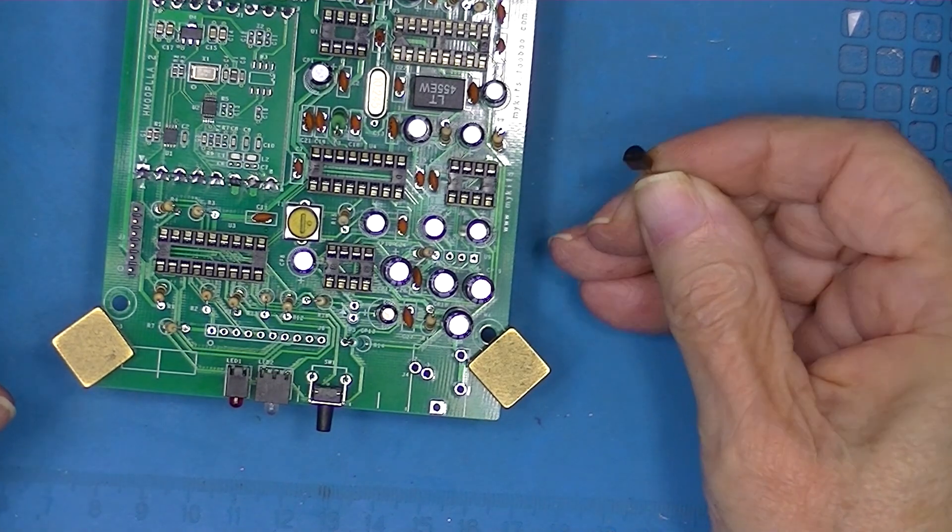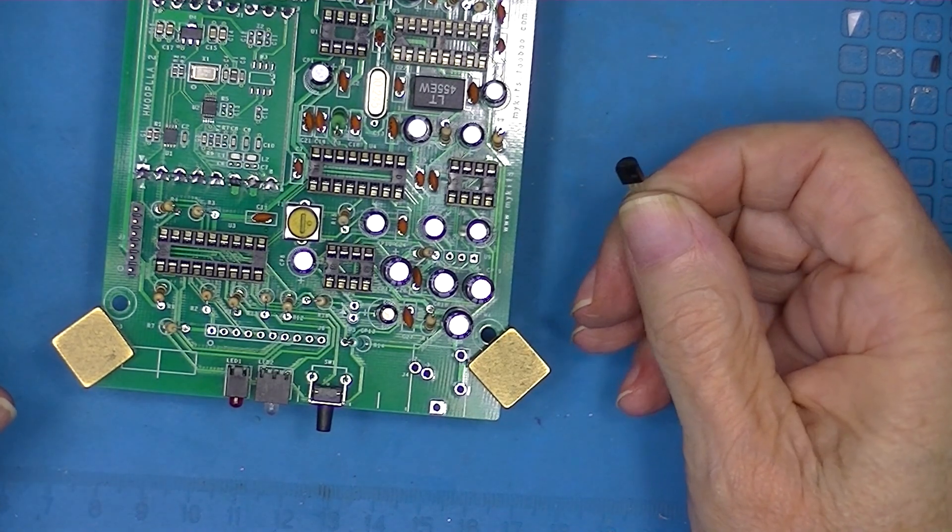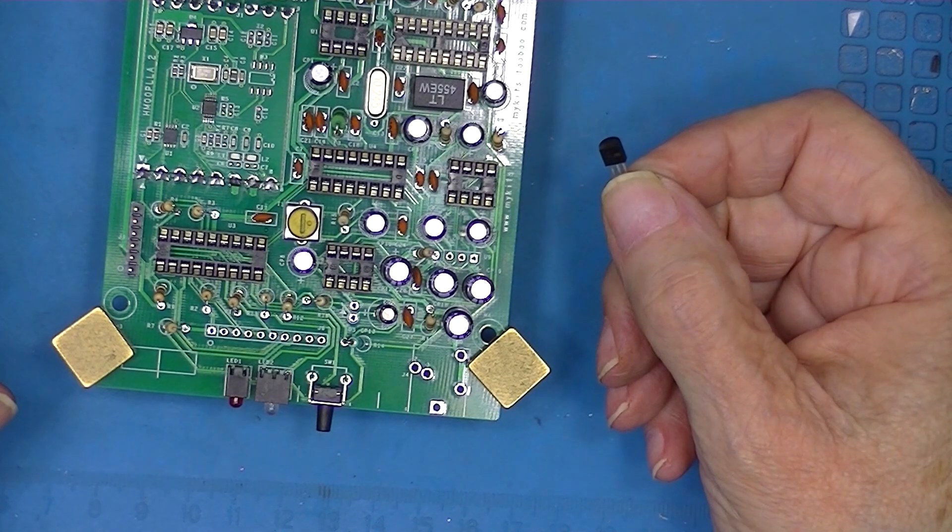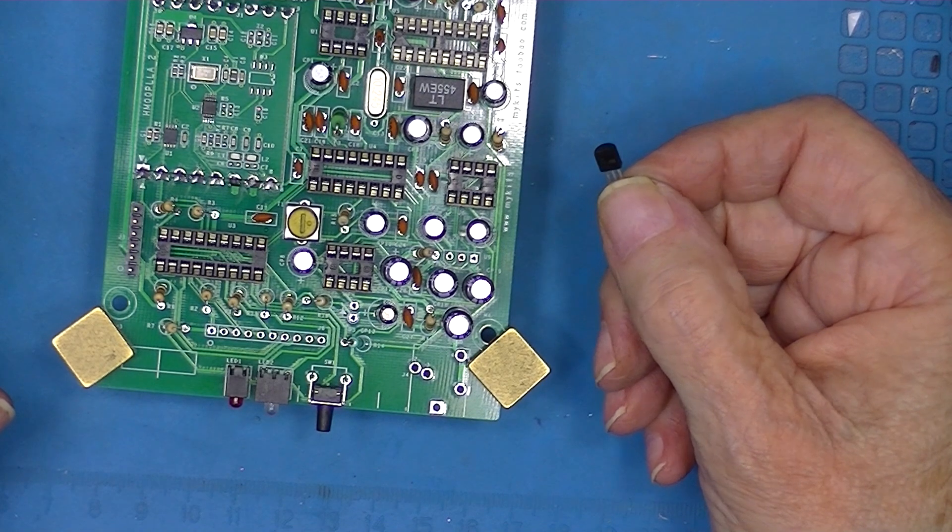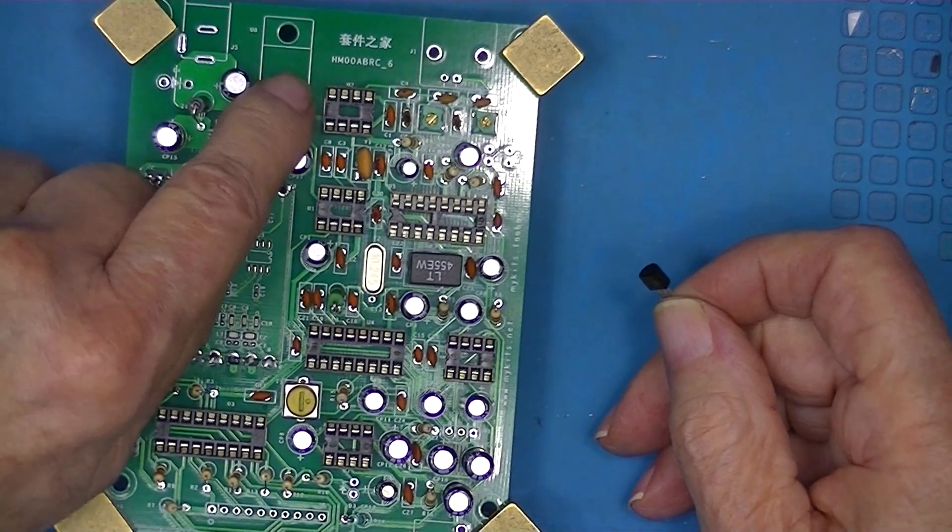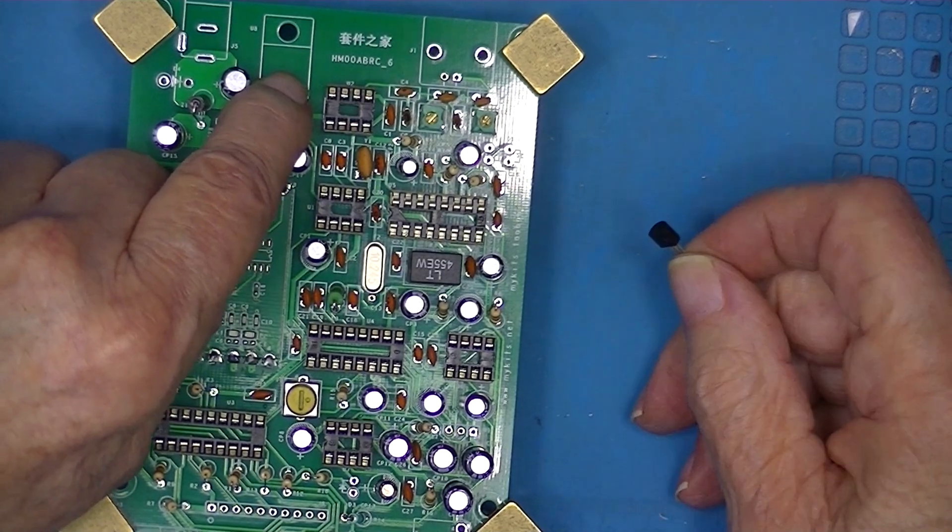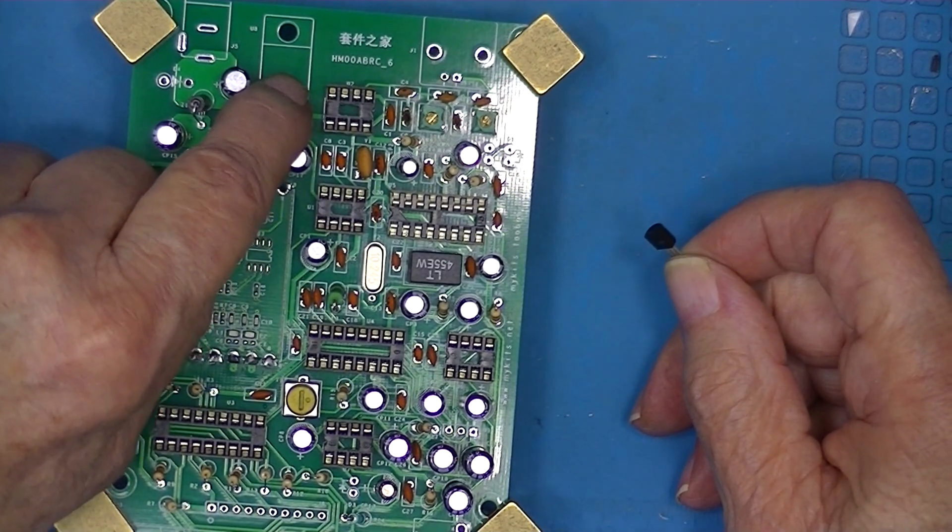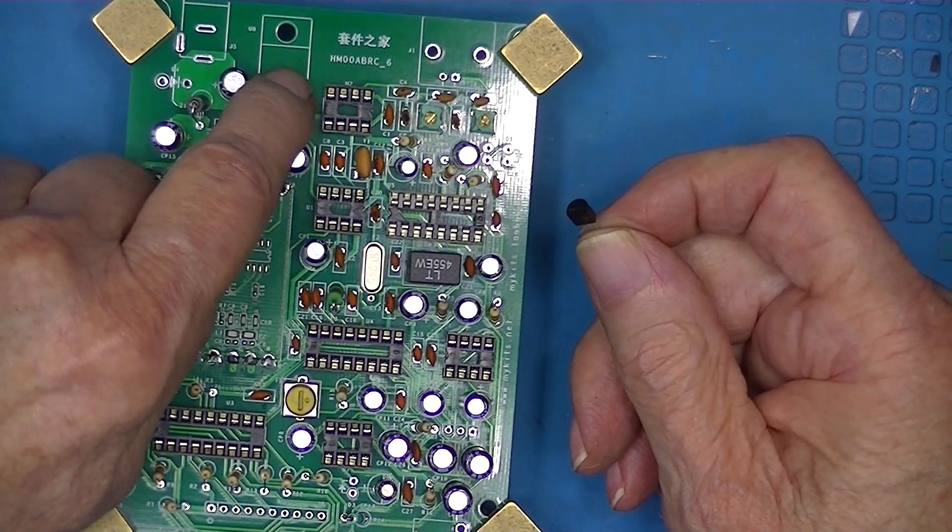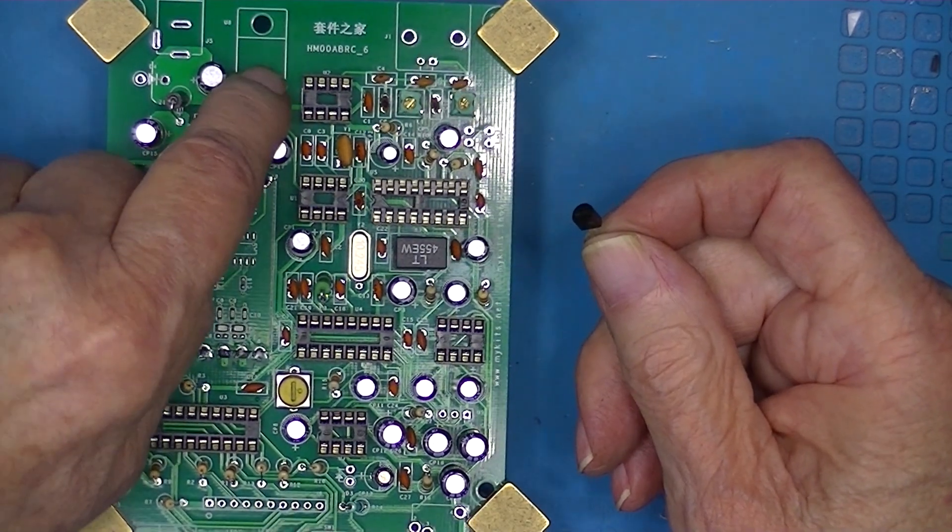There are two three-terminal 5-volt regulators on this project. This is a 78L05. The other one is a 7805. This is a TO92. The 7805 is a TO220.